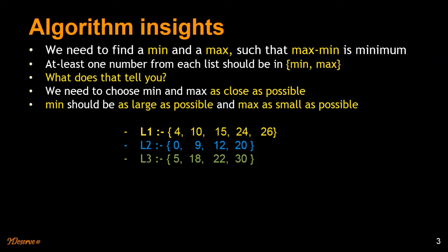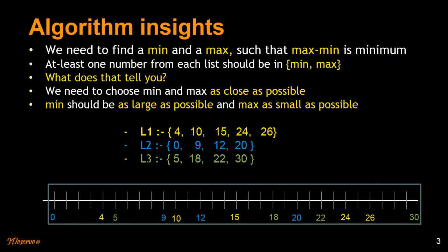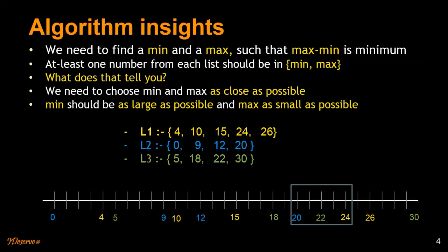We have three lists, color coded, and I'm going to put them on an x-axis. Each number is color coded corresponding to the list it belongs to. If you want to include all numbers we would go from 0 to 30, but we're interested in the shortest range. Here the shortest range that contains at least one element from each list is 20 to 24.